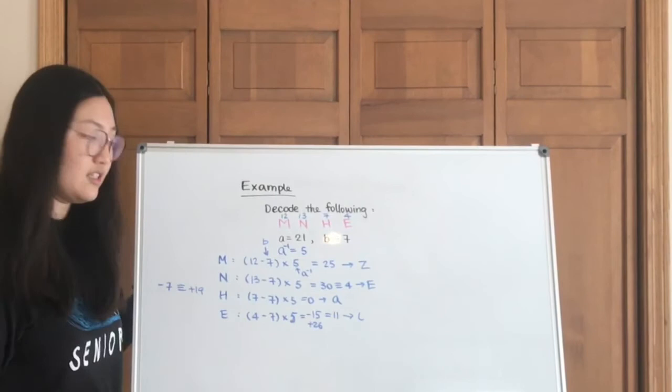And let's put these letters together. Zeal. That makes sense. And this is how you decode with an affine cipher.